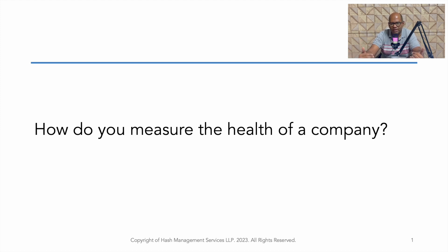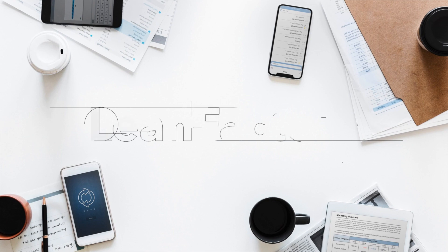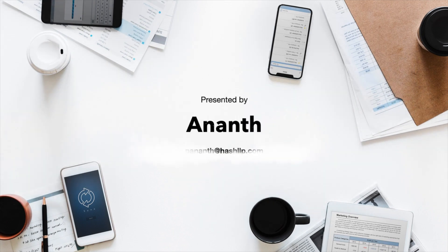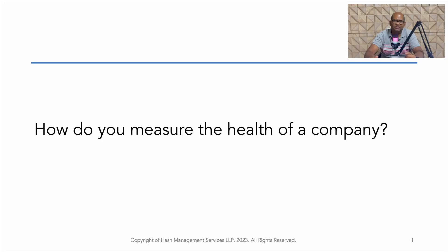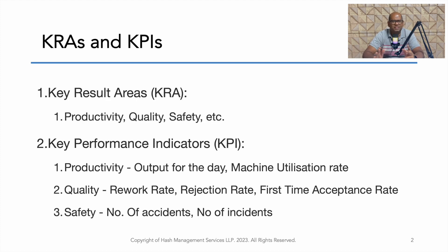Similarly, how do we measure whether a particular company is healthy or not? There are many ways by which we can measure — that is called KRAs and KPIs. That's what we are going to learn in detail today. Hi, my name is Anand and I'm your trusted lean manufacturing implementation partner. Today in this video we are going to learn about KRAs and KPIs and discuss the key performance indicators for production, quality, maintenance, and other departments in a typical manufacturing organization.